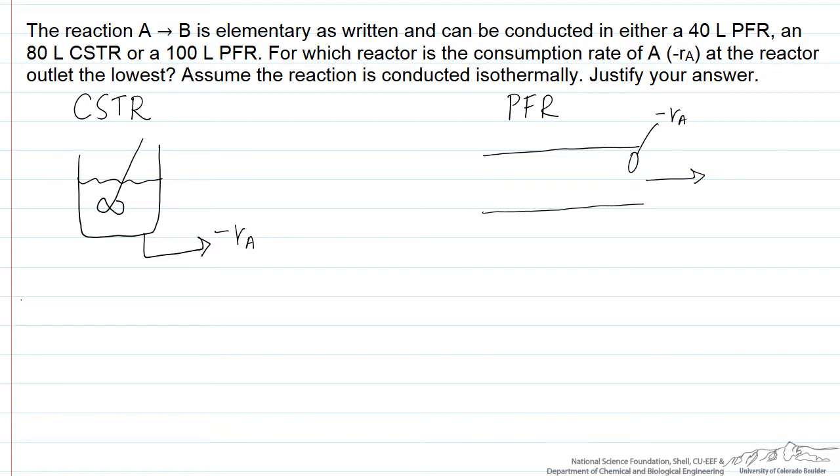The reaction rate is going to be linearly related to concentration in this case because we have an elementary reaction that involves one A molecule on the reactant side and is irreversible. We can write that in terms of a first order dependence on the concentration because of the implied one stoichiometric coefficient in front of A. The rate is going to be lowest when the concentration is lowest because K is fixed at a given temperature.